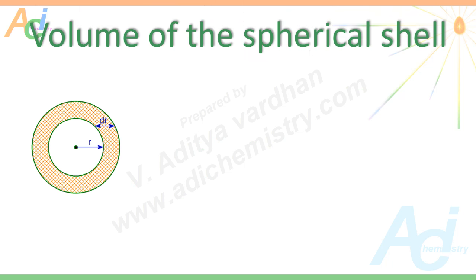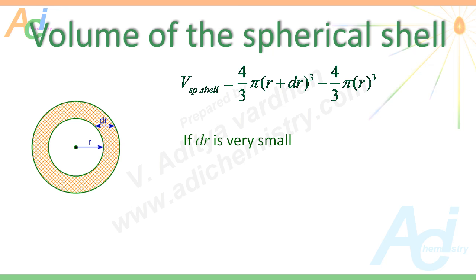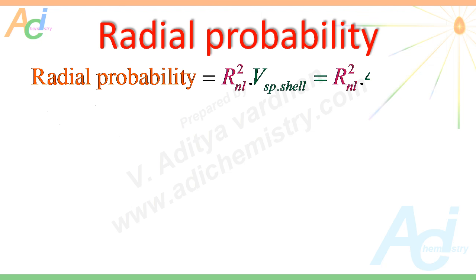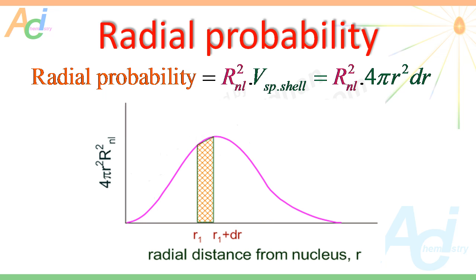Now let us derive the volume of the spherical shell. It is equal to the volume of a sphere with radius r + dr minus the volume of a sphere with radius r. If dr is very small, the volume of the spherical shell can be written as 4πr²dr. Thus, the radial probability can be expressed as R_nl² · 4πr²dr. The shaded area shown in the following Radial Distribution graph represents the radial probability of a spherical shell enclosed between a sphere of radius r₁ and a sphere of radius r₁ + dr.